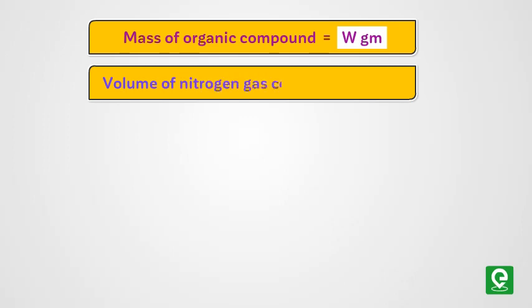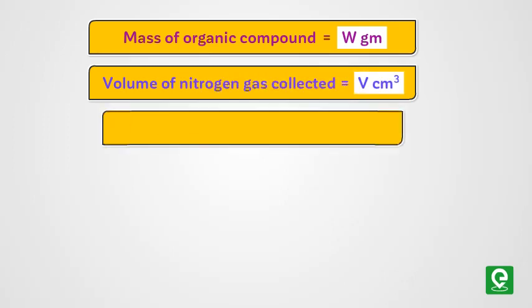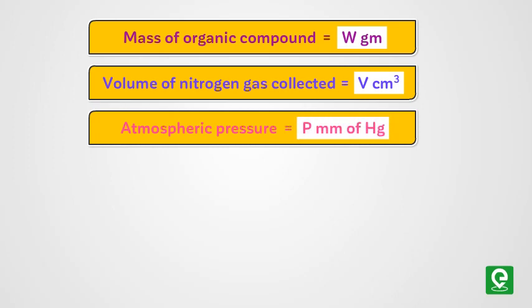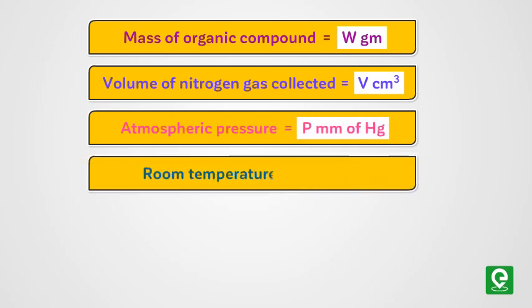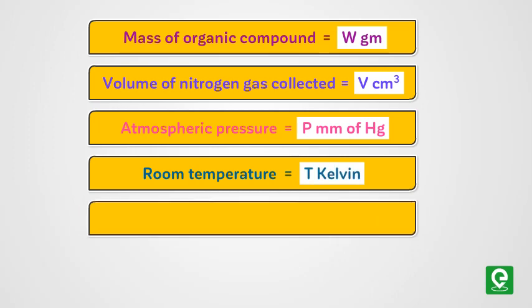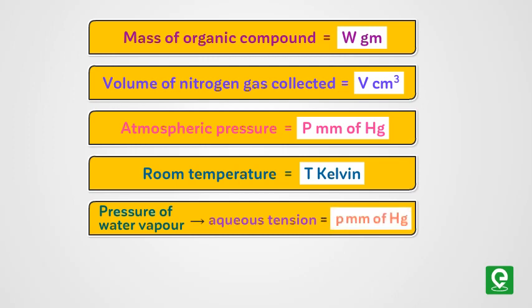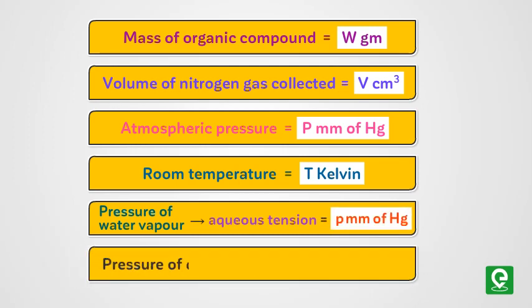Let's say in an experiment the mass of organic compound taken is W grams. Volume of nitrogen gas collected is V centimeter cube. Atmospheric pressure is P mm of Hg. Room temperature is T Kelvin. Pressure of water vapor at T Kelvin, that is aqueous tension, is small p mm of Hg. Thus pressure of dry nitrogen is P minus p mm of Hg.